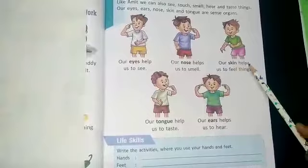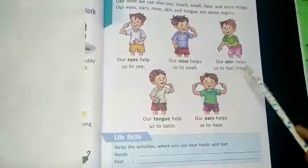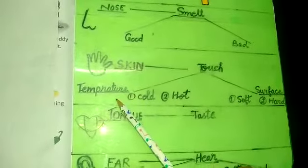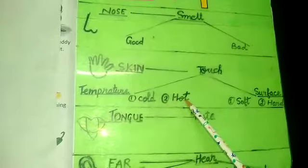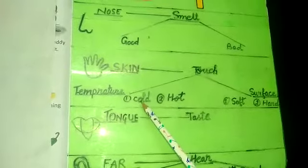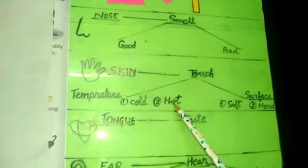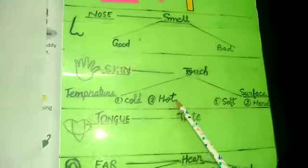Our skin helps us to feel things. Skin के द्वारा हम किसी भी चीज़ को touch करके महसूस करते हैं. By skin, we touch things, we come into contact with things, and it tells us the temperature and surface. Temperature means तापमान. Temperature is of two types: cold and hot. The temperature of an ice cream is cold. जब आप ice cream खाते हो, तो आपको मुँह में ठंडी लगती है.